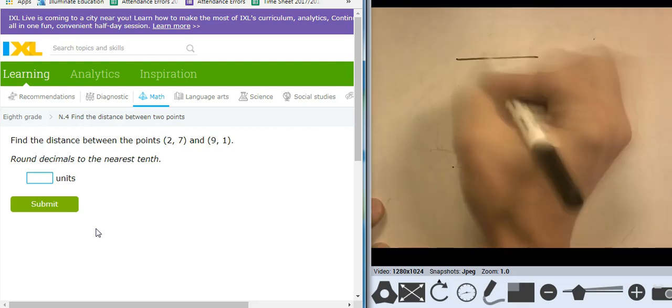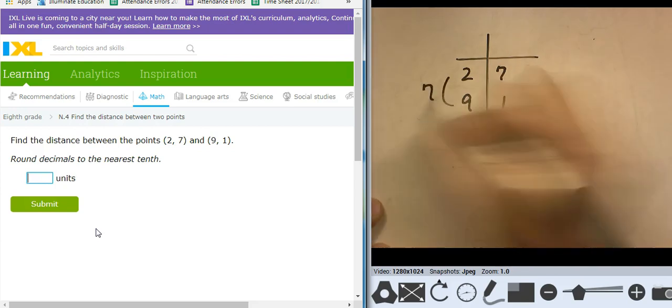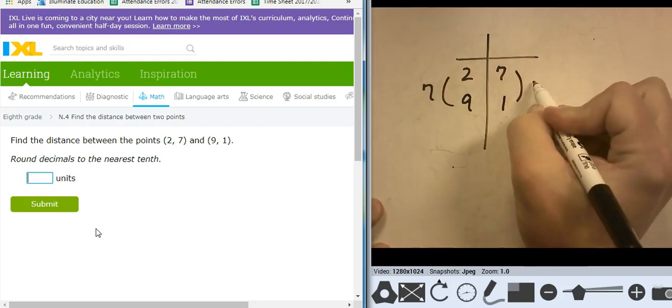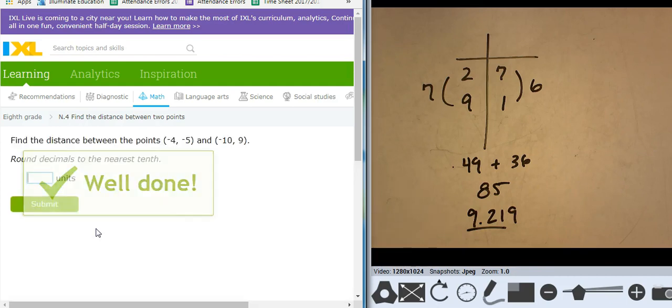Next one. 2, 7, 9, 1. That's a change of 7. That's a change of 6. So I'm looking at 49 plus 36. 49 plus 36 is 85. Square root of 85 is 9.219. So with the rounding, it's just 9.2. Well done.